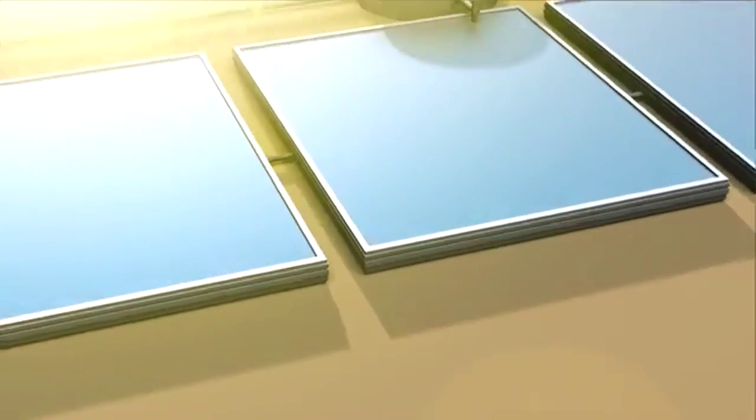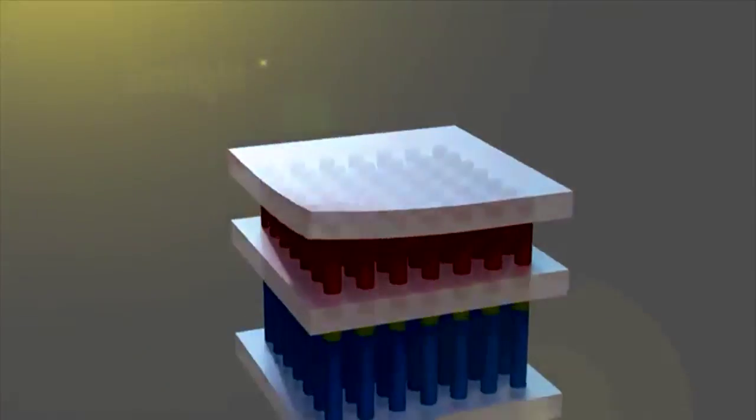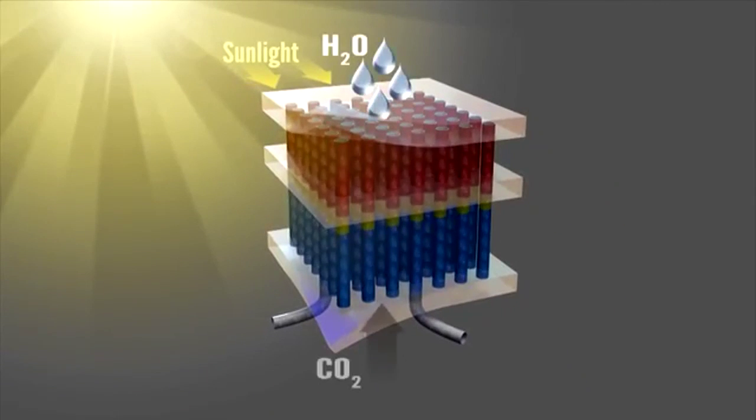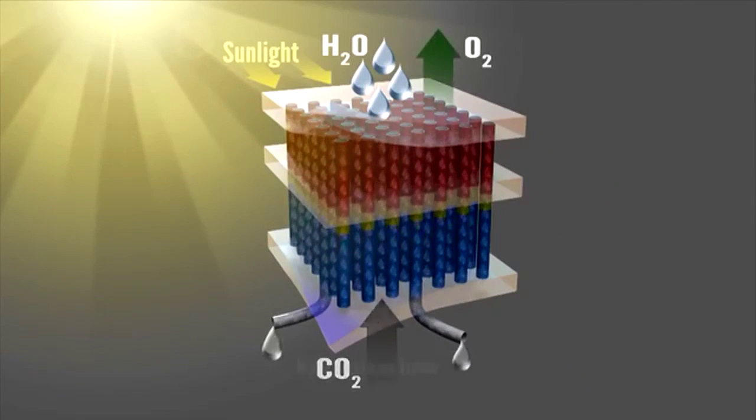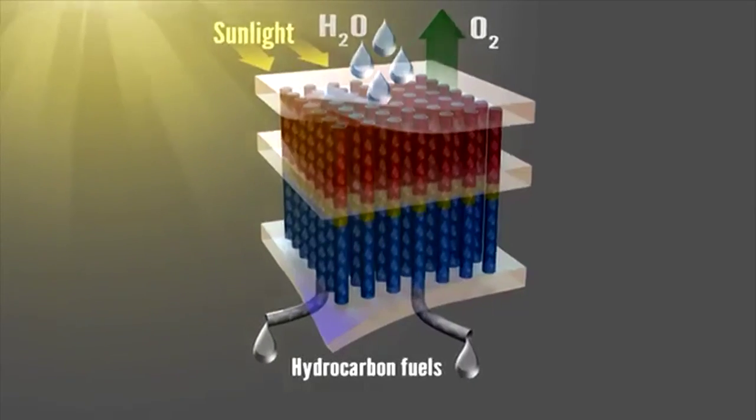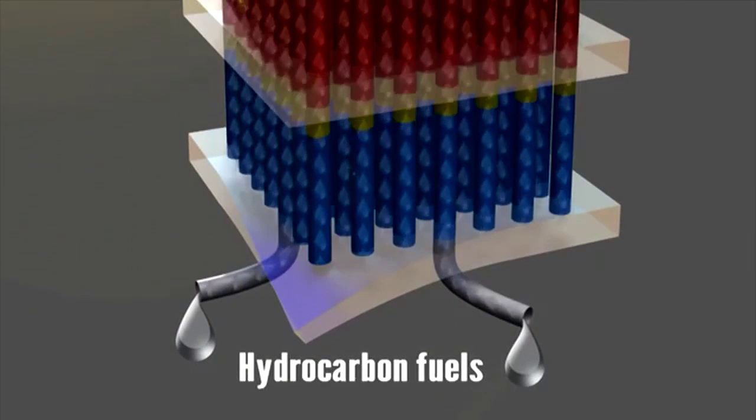These nano-engineered materials will work much like the components of a leaf. Light-absorbing compounds convert the sunlight into electrical energy that is delivered to customized catalysts that convert water and carbon dioxide to oxygen and chemical fuels. Specialized membranes support the light absorbers and catalysts, allowing oxygen to escape and the fuels to be wicked away.